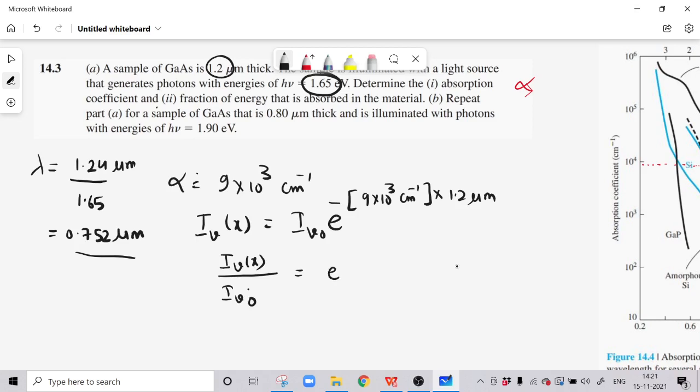From here we get 1.2 times 10 raised to minus—1 centimeter is 10 raised to minus 2 meters. You will get everything in meters and you will get this value as 0.34. This is the ratio.